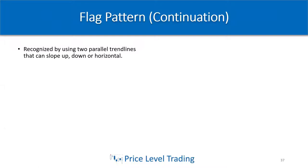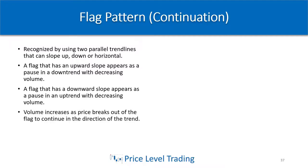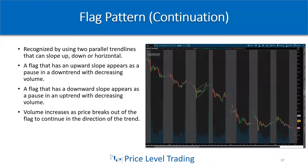Next up is another continuation pattern called the flag pattern. It's recognized by using two parallel trend lines that can slope up, down, or horizontal. A flag with an upward slope appears as a pause in a downtrend with decreasing volume, and a flag with a downward slope appears as a pause in an uptrend with decreasing volume. Volume increases as price breaks out of the flag to continue in the direction of the trend — so if you're jumping in on a flag breakout, you want to see volume increase in the direction price is moving.